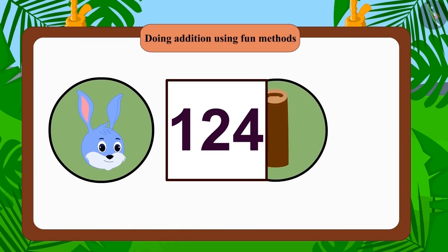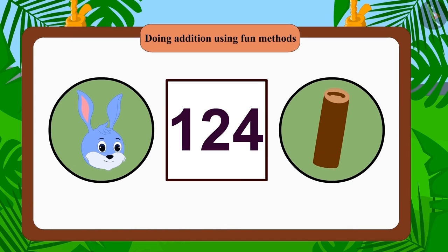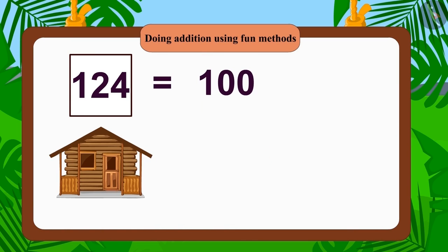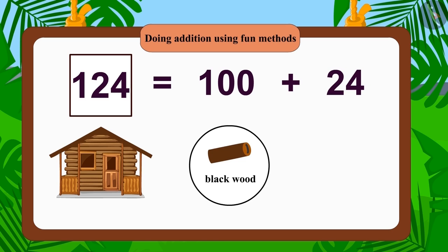Bunny built his house with 124 pieces of wood. He built his house using 100 pieces of black wood and 24 pieces of yellow wood.